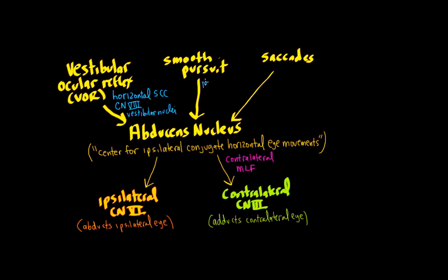For smooth pursuit, you actually have to see what's going on - visual cortex and vestibular nuclei. And then for saccades, we're going to focus on the frontal eye field, the caudate, and the pontine paramedian reticular formation, the PPRF.